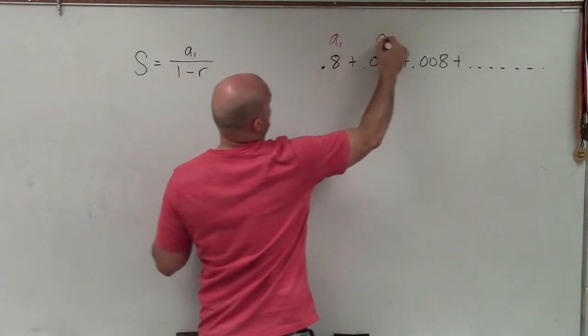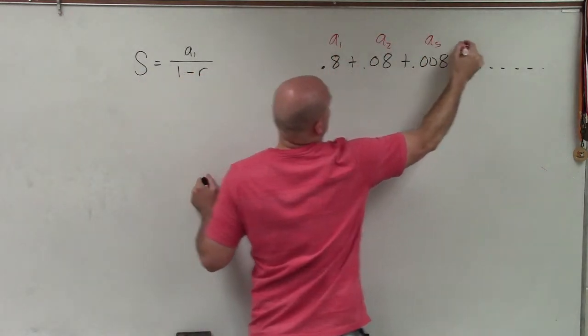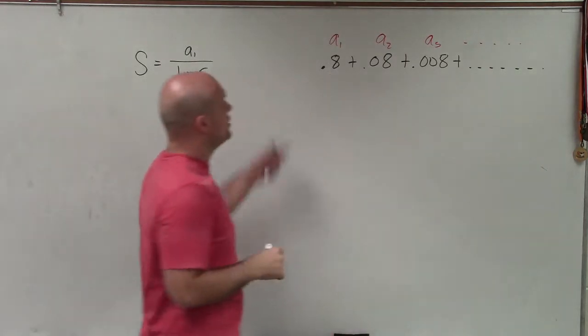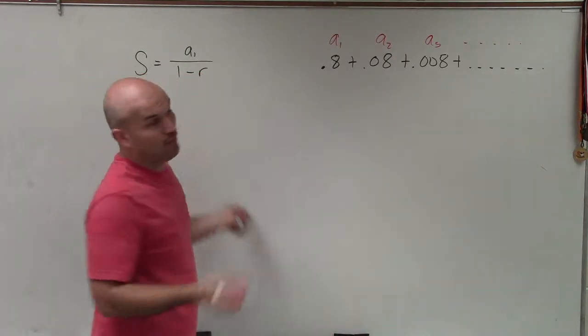So we can just label our terms a₁, a₂, a₃, and so on, right? So we need to know a₁, which is obviously 0.8.